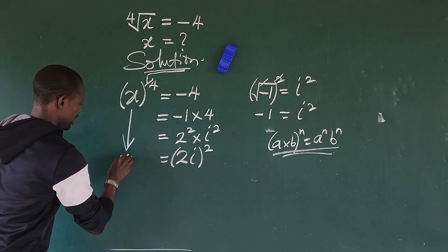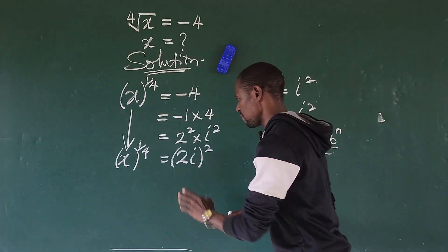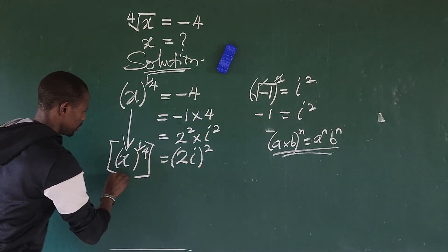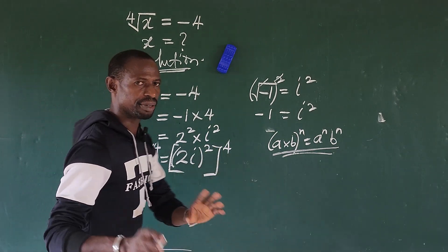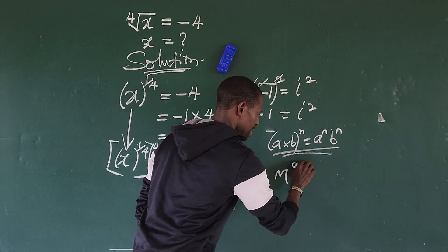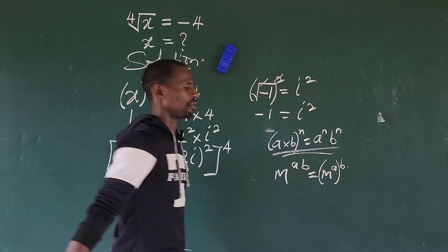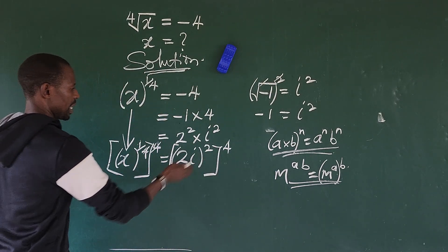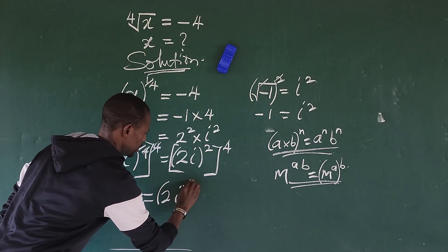So let's bring our expression down here: x to the power of one over four equals two·iota to the power of two. Because we are looking for x, we have to take the fourth power of both sides. We recall the law that m to the power of a times b equals m to the power of a, all raised to the power of b. Using this law, we multiply the exponents, and we get x equals two·iota to the power of eight.